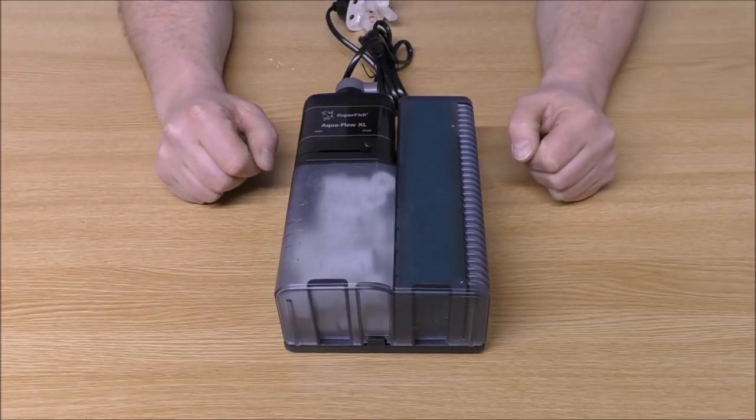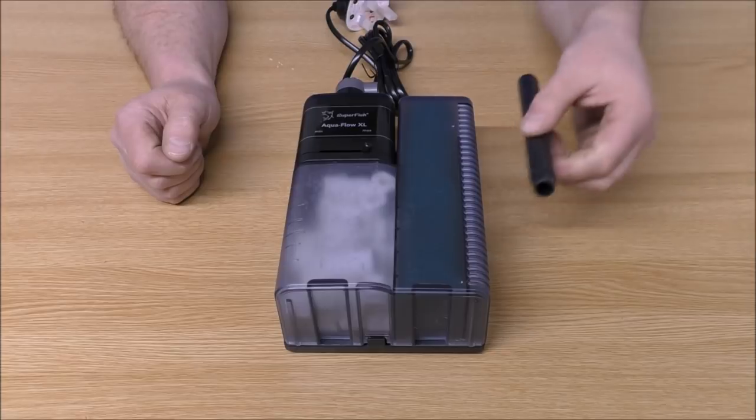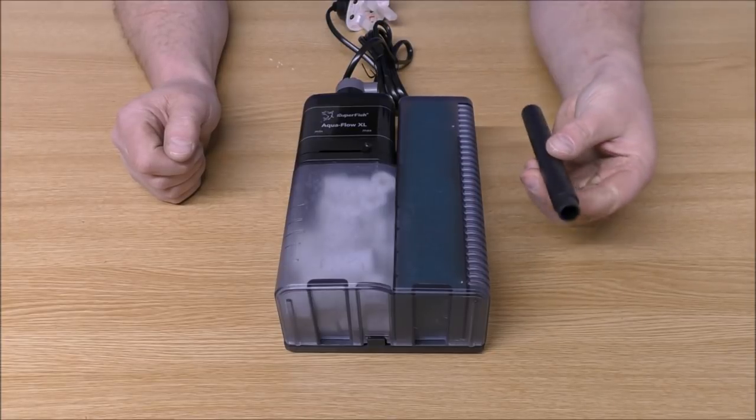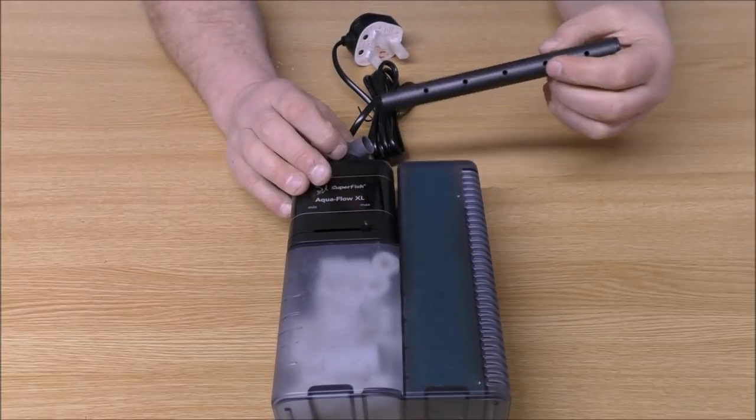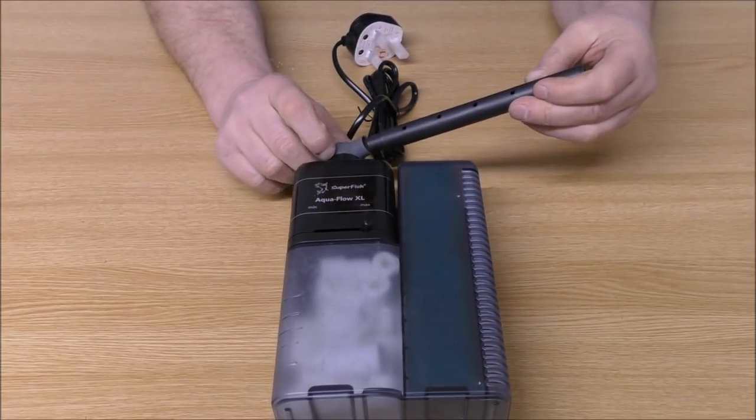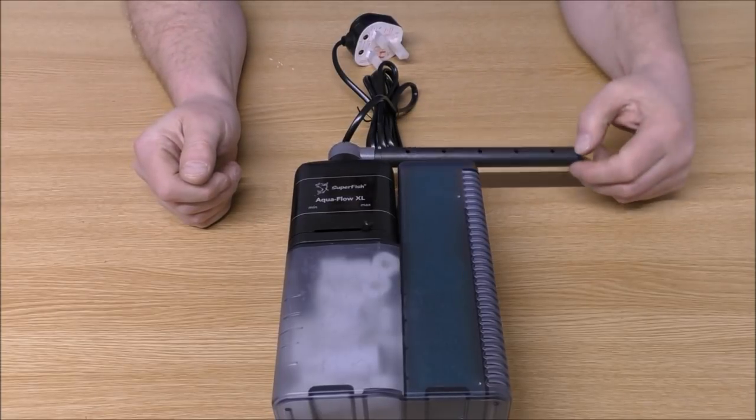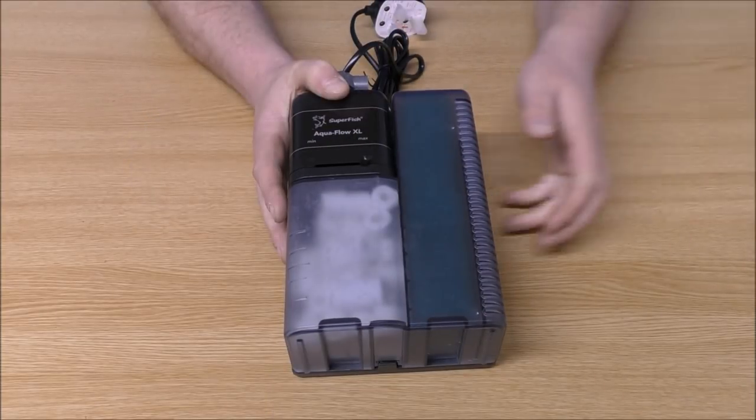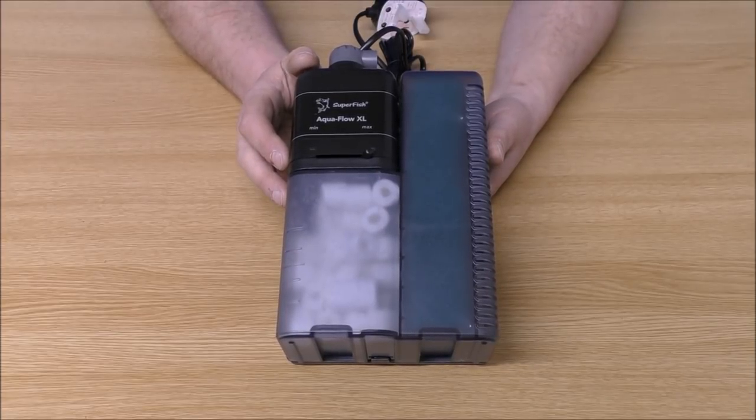Okay let's have a look at what's in the box. That's our filter. That is our spray bar. This is a very easy one to put together. All we do is push that into the pump outlet and that's it. Let's take that off while I explain how this works. And this is a really simple filter.